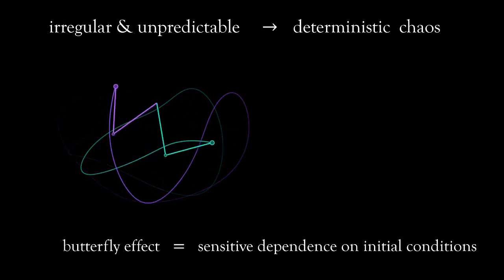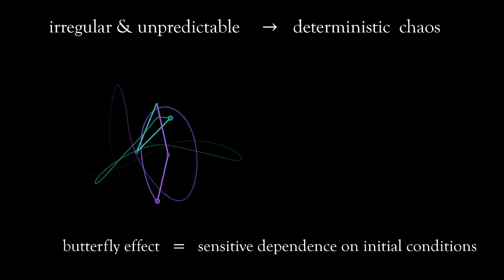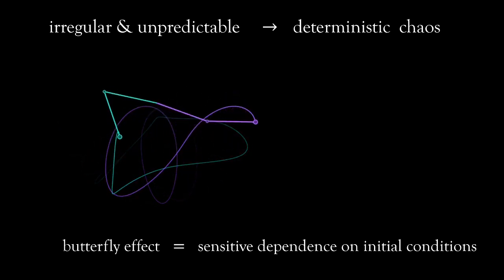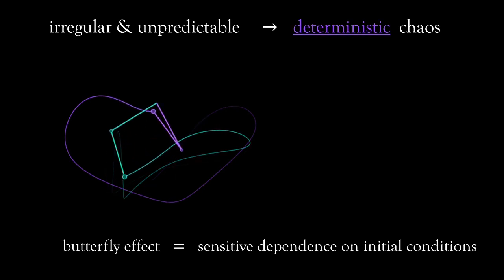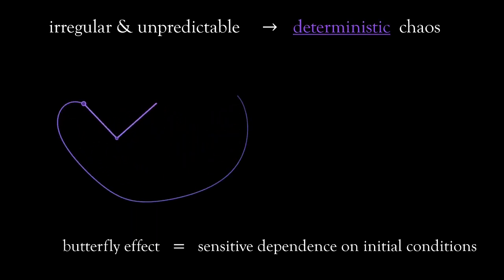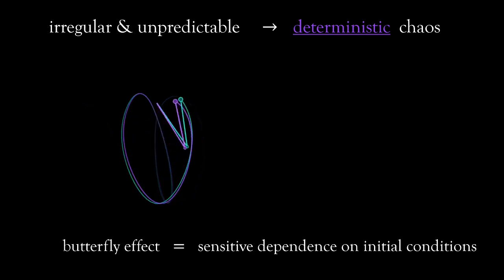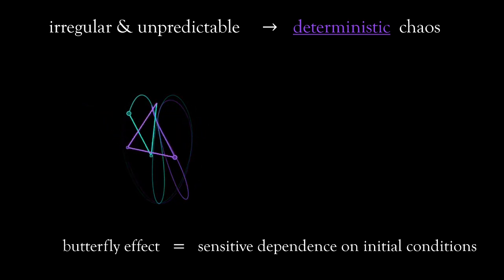All right, now before we carry on, let me point out an important detail, which is we are looking into systems that are deterministic. This means that they have no inherent randomness. The rules of the game are laid out at the start and we know exactly what these rules are.